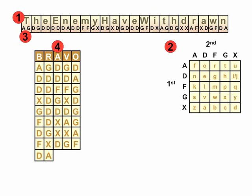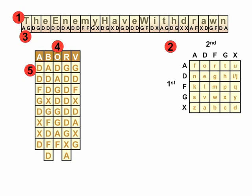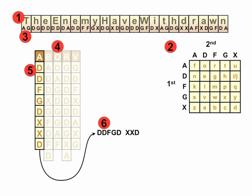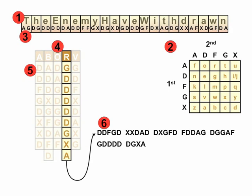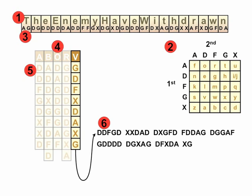Now we reorganize Bravo alphabetically. Bravo alphabetically is ABORV. That's the big step and the innovation that Nebel had — you can make the cipher much tougher by doing this shuffle. Now we read down the A column, then the B column, then the O, R, and V columns. That gives us the enciphered message that we send.